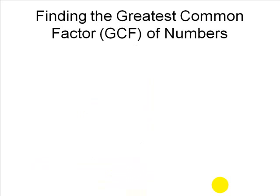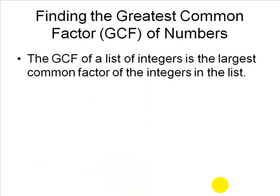To find the greatest common factor of numbers, we are provided with a list of integers. In the list, the largest common factor of integers is known as the greatest common factor.